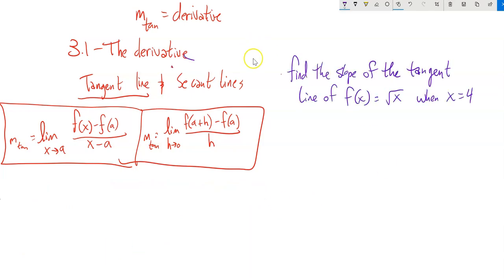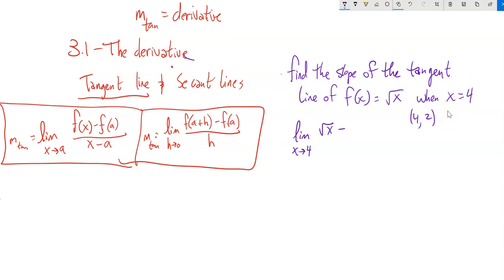We are finding the slope of the tangent line of f(x) = √x when x = 4. Let's use the first definition again. We want x to approach 4. f(4) = √4 = 2, so the point is (4, 2). So I set up [√x minus 2] over [x minus 4]. Again, it's indeterminate form — plugging in 4 gives 0 over 0.